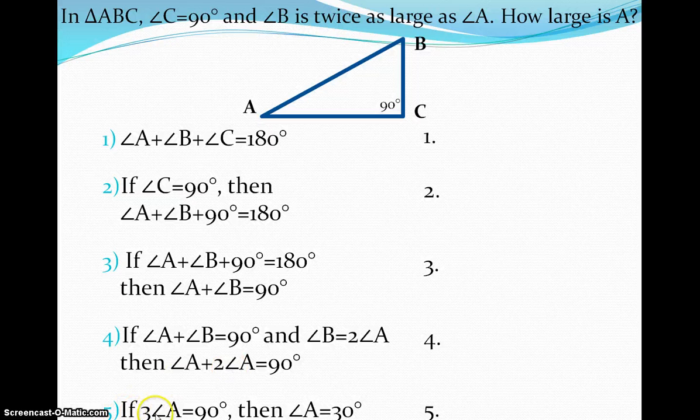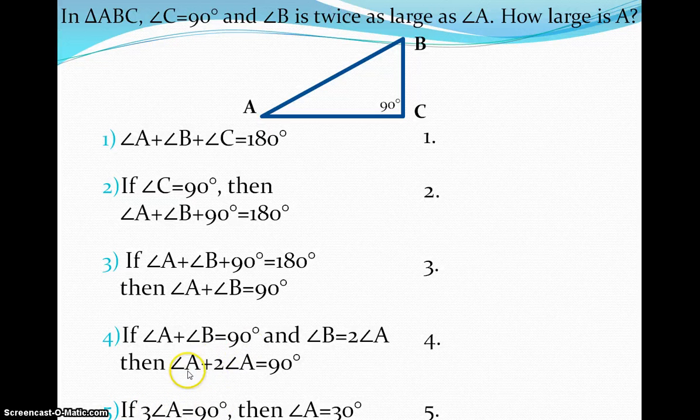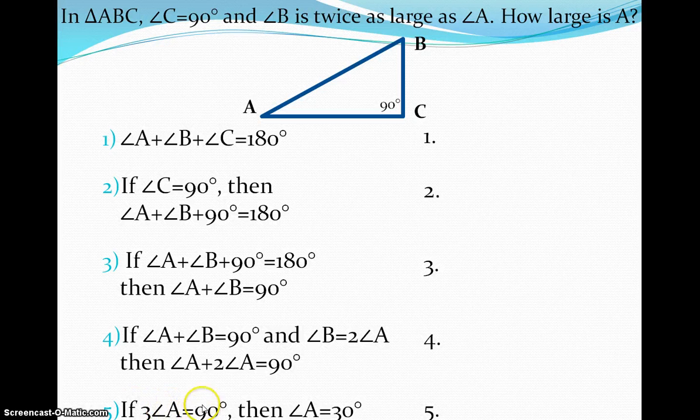And then last but not least, if you can't quite see it, but it says if 3 times angle A is equal to 90, which we got from up here, if we just add those together, then angle A is equal to 30. So why am I able to go from this statement here to this one over here? And I want you to put that in number five.